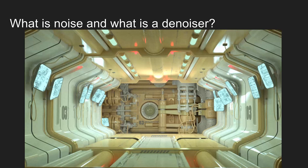Starting with the basic question: what is noise and what is a denoiser? Noise is basically any kind of random, small, irregular artifact that makes our results different from the ideal ones. This happens in many situations — photographs, video recordings, audio recordings — even when you talk to somebody in a noisy room, you hear their voice along with all the other random sounds around you. All of that is noise.